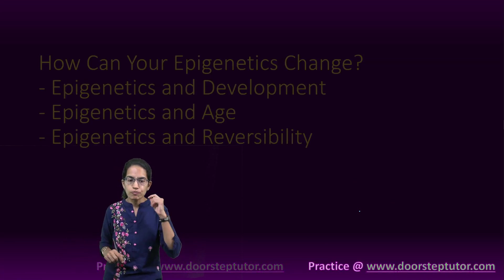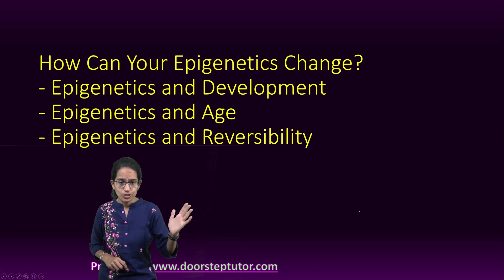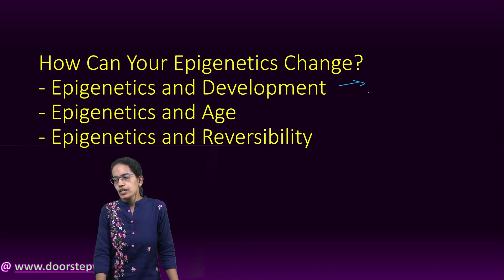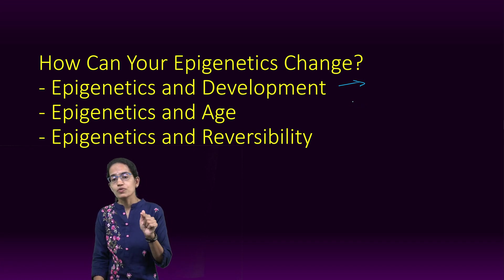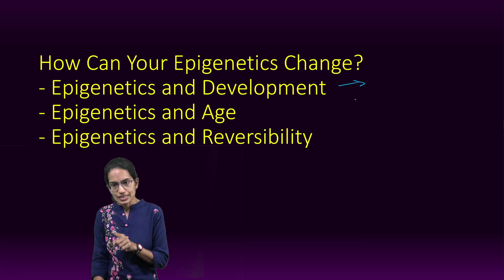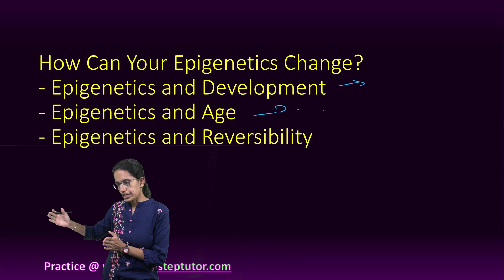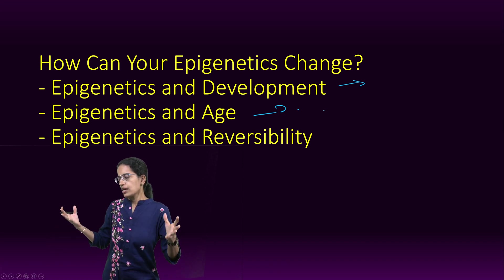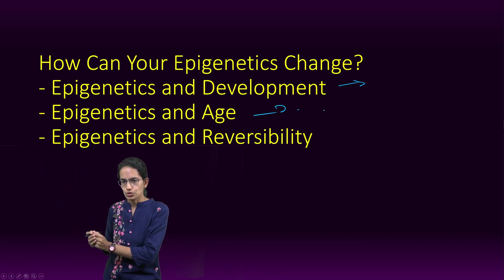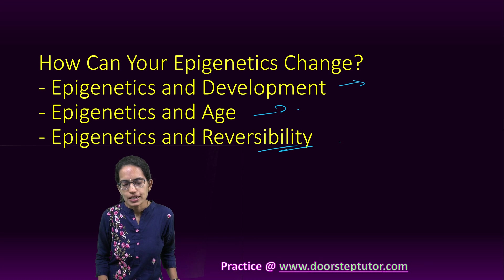Epigenetic changes can occur due to various factors. The first is development — even before a child is born, epigenetic changes can occur due to the mother's diet. If the mother's diet is healthy, those changes pass to the child in the womb. The second factor is age — at a younger age you have millions of epigenetic sites, but as you grow older those sites are reduced.